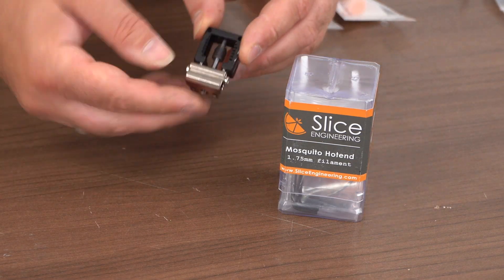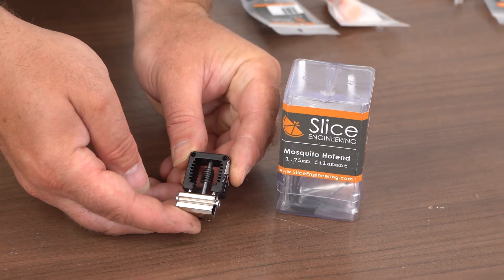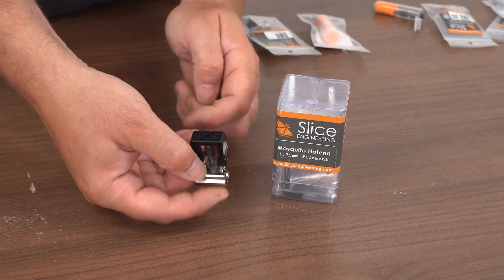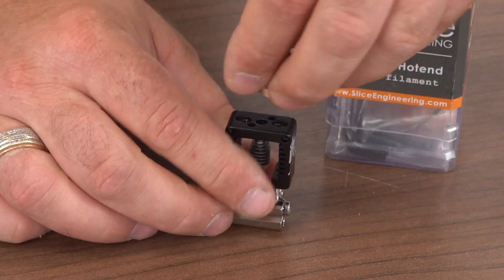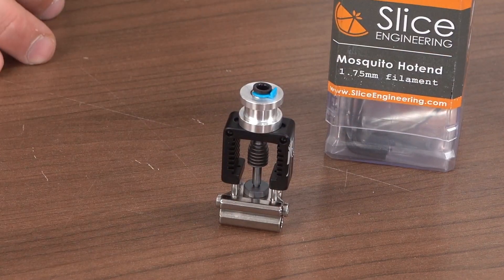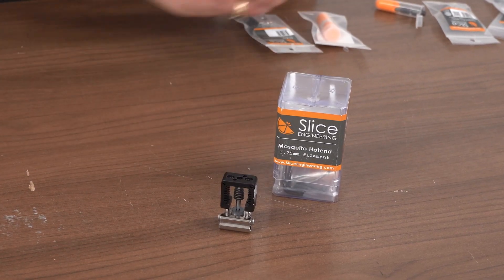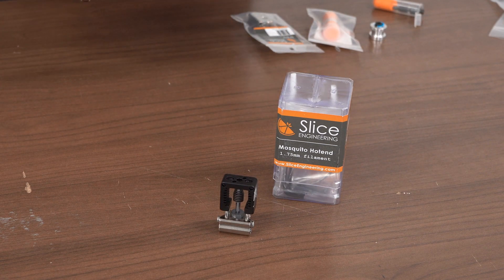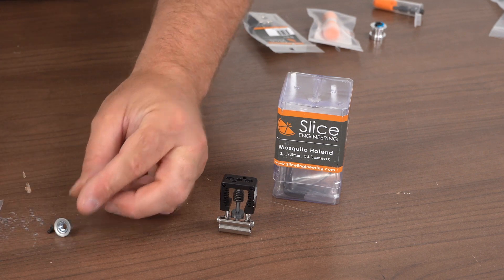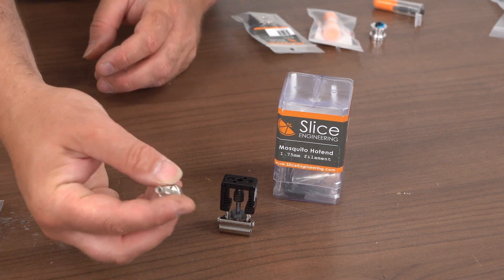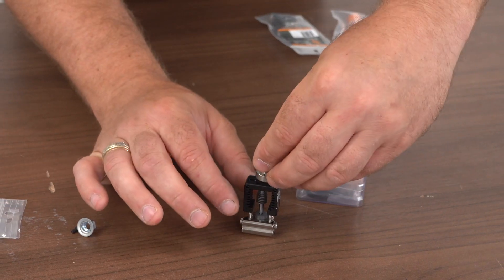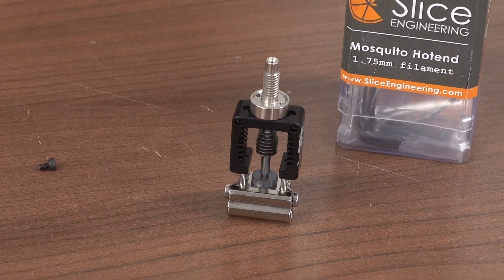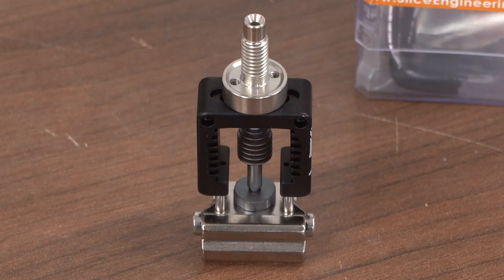So first off in front of us we have the Mosquito hot end as it comes. If you require different mounting other than screwing it into your printer from the top here, you can purchase the groove mount. If you have a groove mount, we also have a threaded stem adapter. The threaded stem adapter is for nozzles with adjustable heights or a Createbot style printer where you might need to thread it in, and that just mounts on the top of the Mosquito. So you can adapt them to other printers as well.